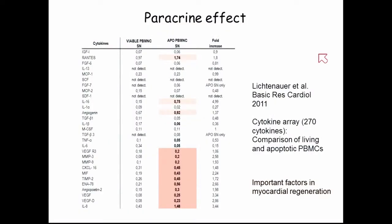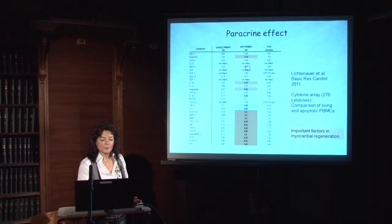Today I present the preclinical experiments with paracrine factors in cardiac regeneration. This slide shows the important factors in myocardial regeneration secreted by viable peripheral blood mononuclear cells or apoptotic peripheral blood mononuclear cells. A lot of regenerative factors are upregulated to a higher degree in the apoptotic peripheral blood mononuclear cells secretome compared with the viable peripheral blood mononuclear cells. Our group compared the two secretomes and found that many regenerative factors can be found in the apoptotic mononuclear cells secretome.